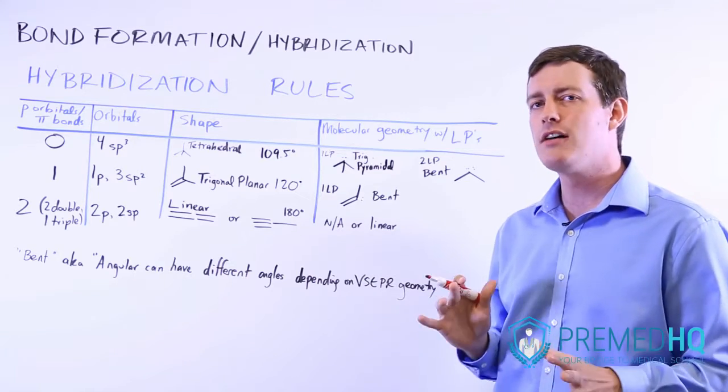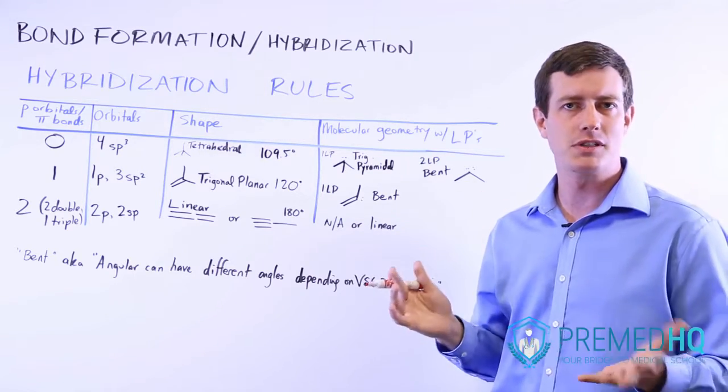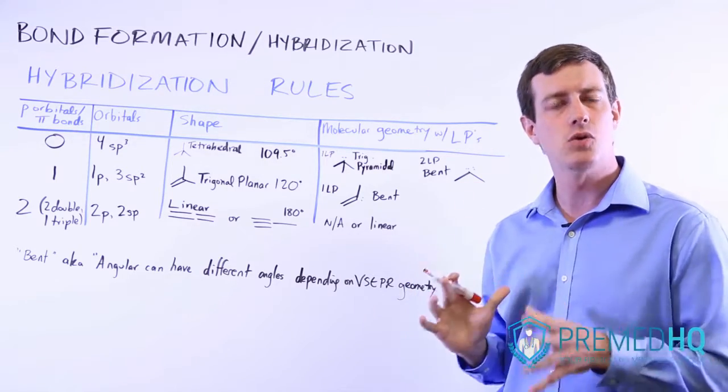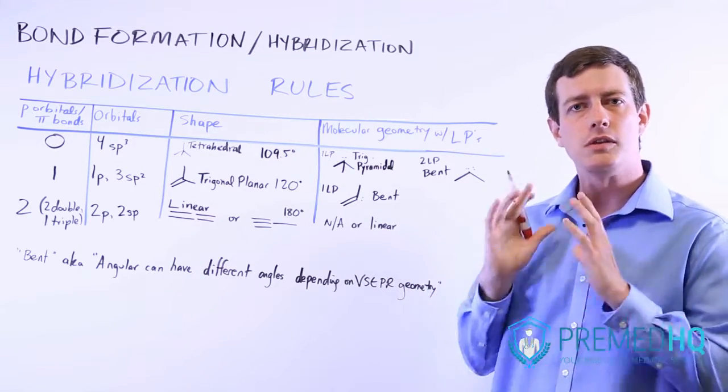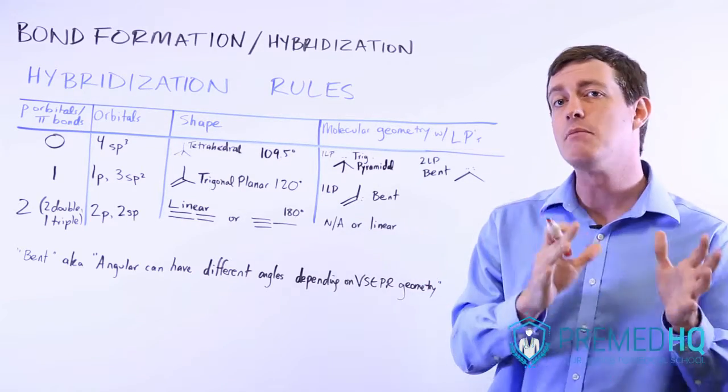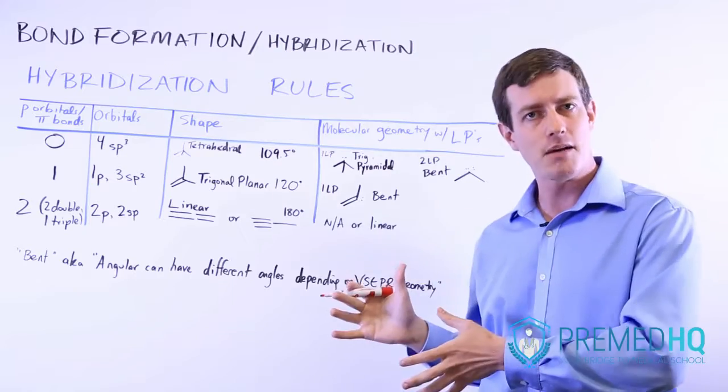Essentially if you have a pi bond being formed, so if you have double bonds or triple bonds, remember that those require an intact p orbital. The p orbital must be preserved in that bonding arrangement, and that means that the p orbital doesn't hybridize.